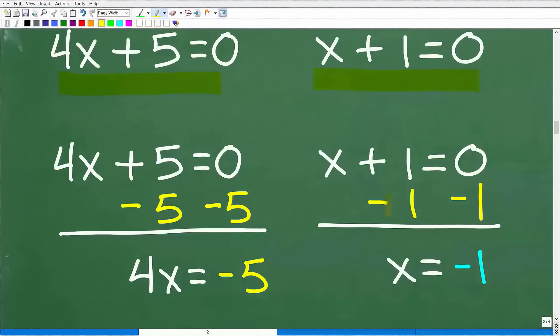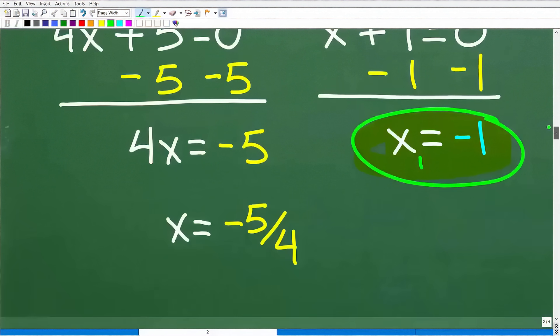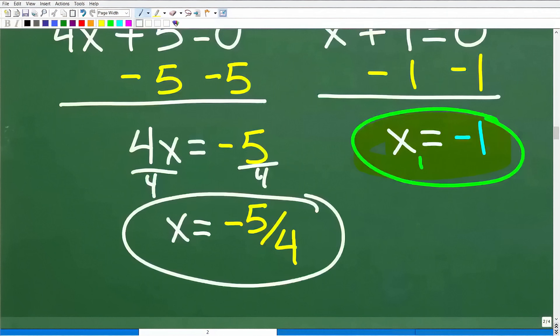We have each of these binomials. We'll set it equal to zero and solve for x. Super easy stuff. So x plus 1 equals zero. All I have to do is subtract 1 from both sides of the equation. So this is one of my solutions, x sub 1 equals negative 1. Then here, I'm going to subtract 5 from both sides of the equation, and I'll end up with 4x equals negative 5. I need to divide both sides of the equation by 4. So you end up with x equals negative 5 fourths. This is my second solution. A quadratic equation, two solutions. In this case, they are two real number solutions. They're part of the real number system.